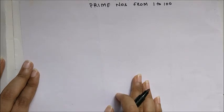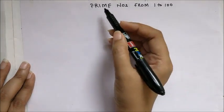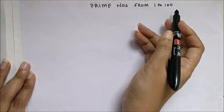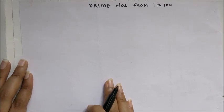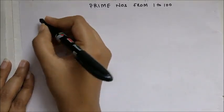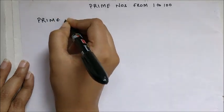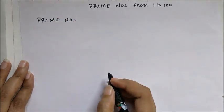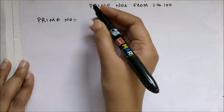Let us begin with our video where I'm going to show you a trick with which you will be able to identify the prime numbers from 1 to 100 in a matter of seconds. But before that, let's quickly revise what a prime number is. A prime number is a number which gets divided only by itself or 1.